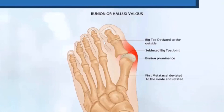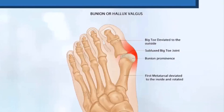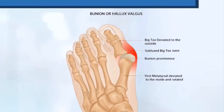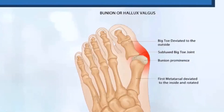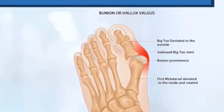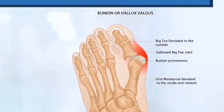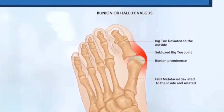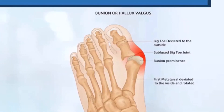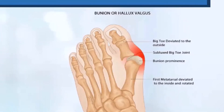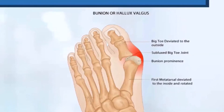Secondarily, with bunions, you can get osteoarthritis or degenerative disease of that joint. You can see the shaded white discoloration there, demonstrating a wearing away of the joint. As the bunion progresses and becomes more enlarged, you can get disease of the joint.